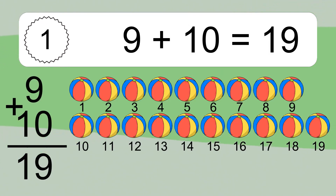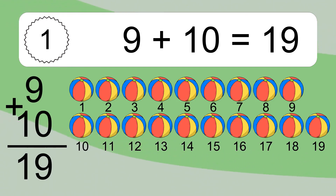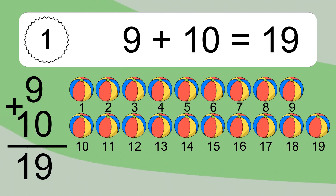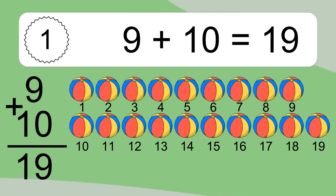Let's count it. 1, 2, 3, 4, 5, 6, 7, 8, 9, 10, 11, 12, 13, 14, 15, 16, 17, 18, 19.